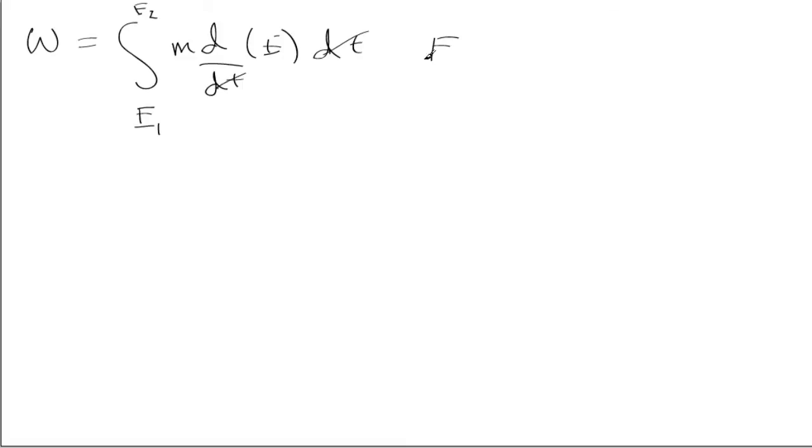Where e is defined by the quantity one-half v squared. We'll make this an e tilde, and hence w is equal to the integral from e1 to e2 of the derivative of e, where now e no-tilde is defined as one-half mv squared.